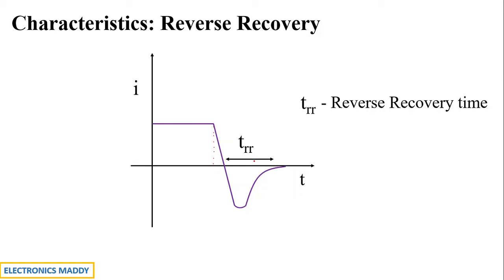Fundamentally, there is no significant difference between a signal diode and a power diode in terms of recovery characteristics — both have almost the same behavior. However, improved recovery characteristics can be achieved, and this is based on the classification of power diodes.